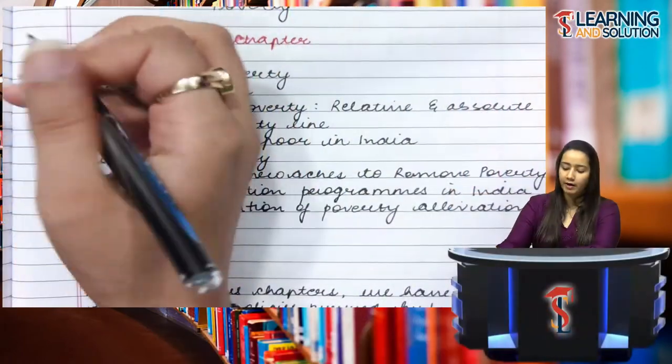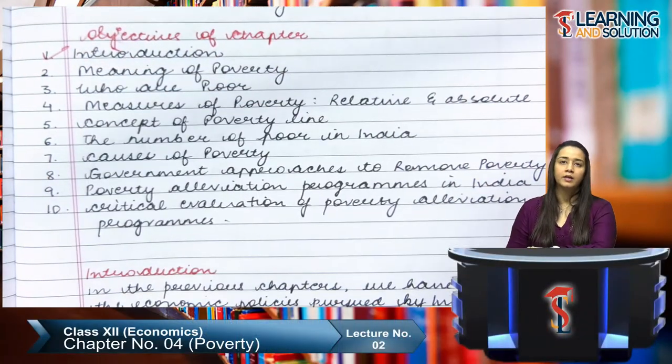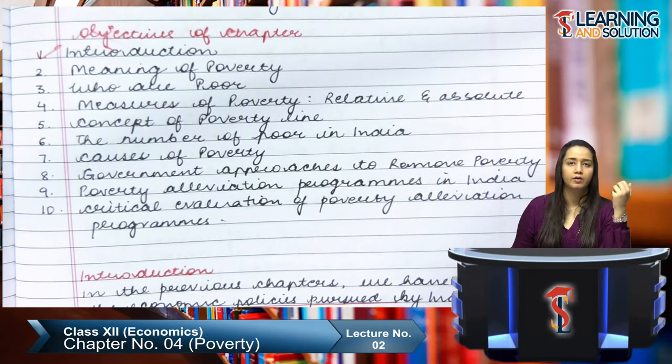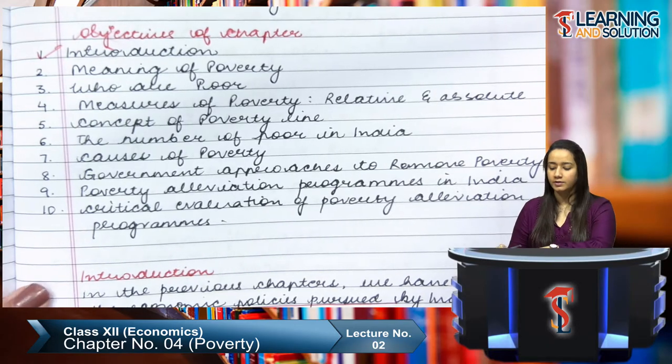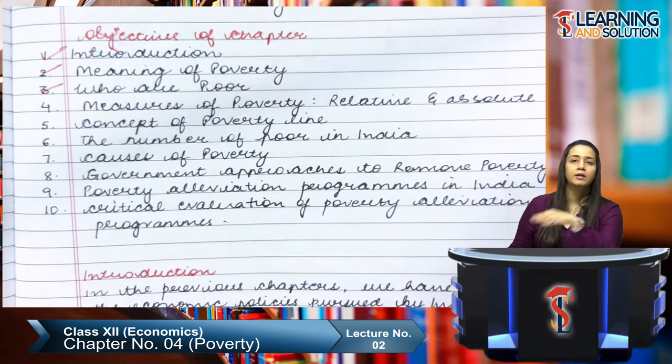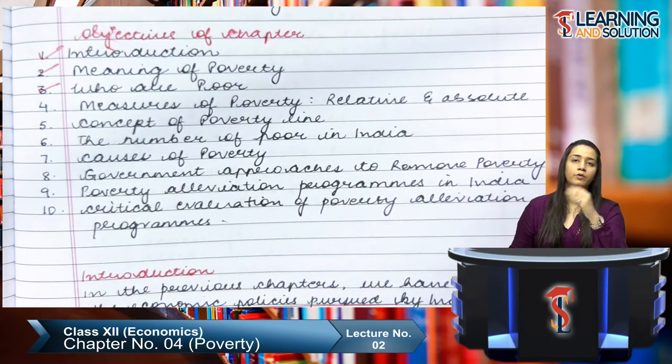Hi students, welcome to your second class of chapter four on poverty. In the last class, we covered a lot of topics: the introduction, the meaning of poverty — that people who do not get the basic amenities or standard of living are categorized as poor — and after that we talked about who are poor, including urban poor and rural poor.